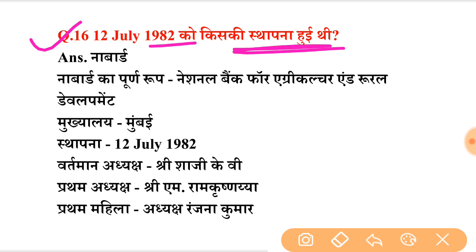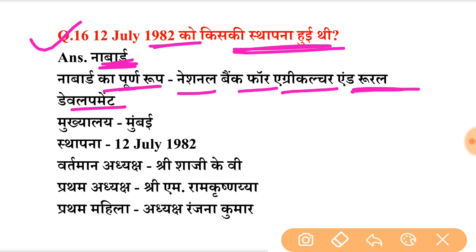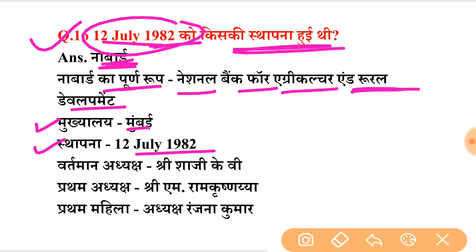NABARD was established on 12 July 1982. The full form of NABARD is National Bank for Agriculture and Rural Development. The establishment date of NABARD — 12 July 1982 — is an important fact to remember.